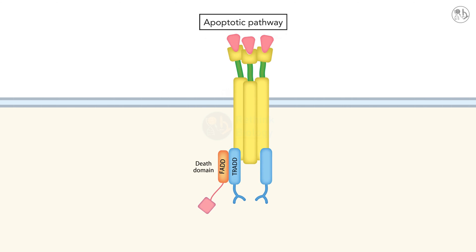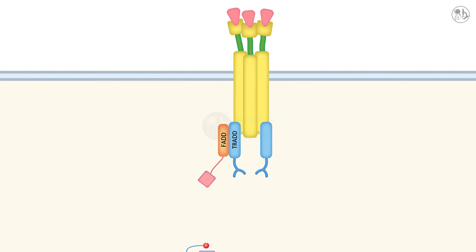In the apoptosis pathway, TRADD interacts with FADD, another protein that contains a DD and a death effector domain, DED. FADD then recruits ProCaspase-8, an inactive precursor of Caspase-8, a protease that initiates cell death.